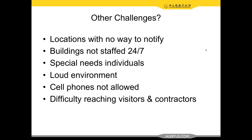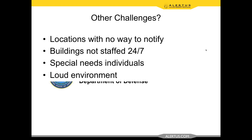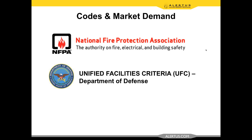The next challenge is buildings not staffed 24/7. Alertus is a network-based system, so we're able to communicate with buildings and activate from a mobile phone, a web-based browser, or the internet to reach buildings that aren't staffed 24/7 — we can jack into and take over that PA system. We have desktop and digital signage solutions that take over existing assets in those buildings.